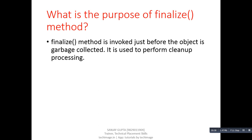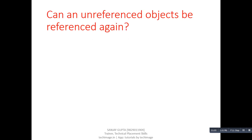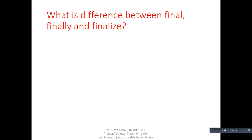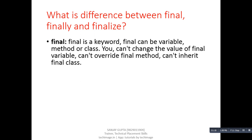Next question: what is the purpose of the finalize method? Answer: The finalize method is invoked just before the object is garbage collected. It is used to perform cleanup processing. Next question: can an unreferenced object be referenced again? Answer: Yes.